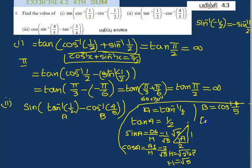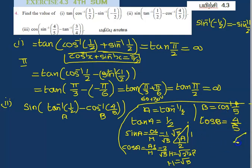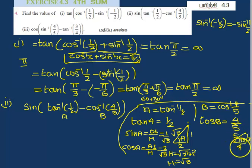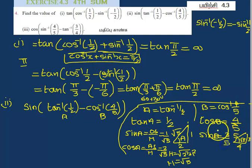Now cos B equals 4 by 5. We draw a right angle triangle for sin B. The hypotenuse is 5 and the adjacent side is 4, so the opposite side is 3 by Pythagoras. Sin B equals opposite side by hypotenuse, that is 3 by 5.